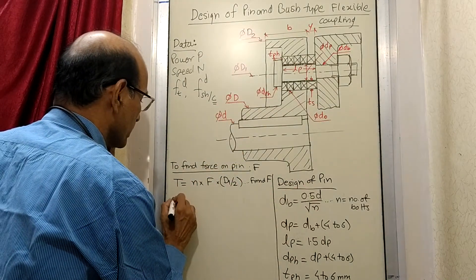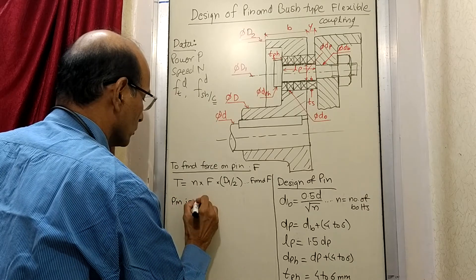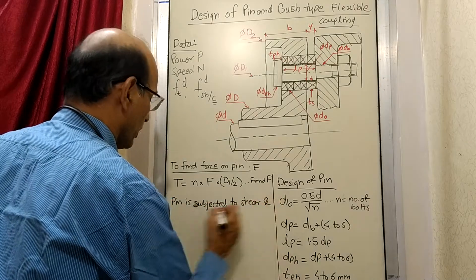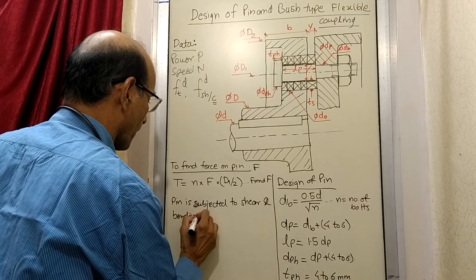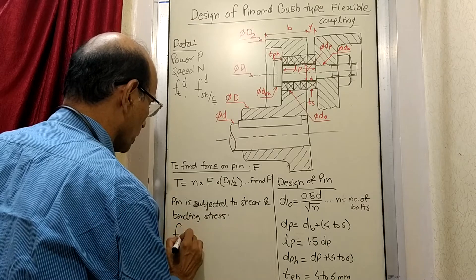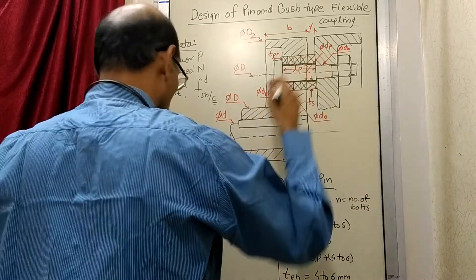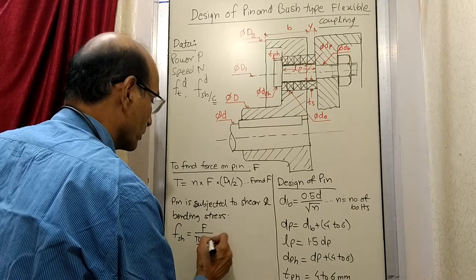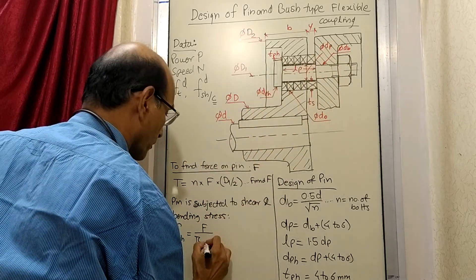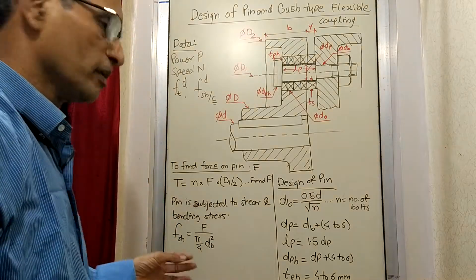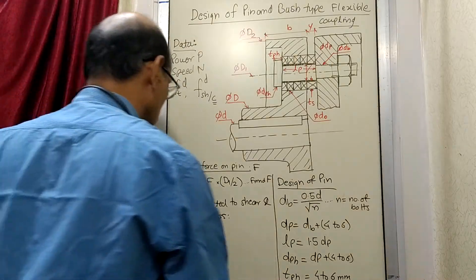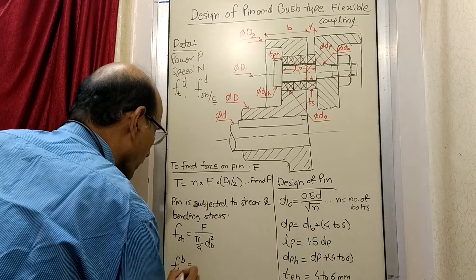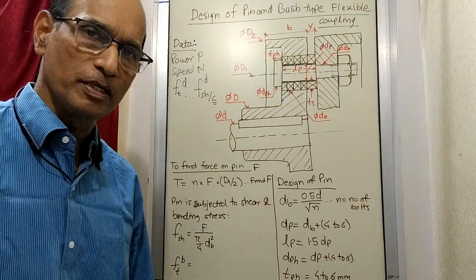The pin is subjected to shear and bending stress. For shear stress: force upon area, so force is F and the area is pi/4 into db squared for one pin. The other stress is the bending stress, F_t bending, which is equal to the bending formula.